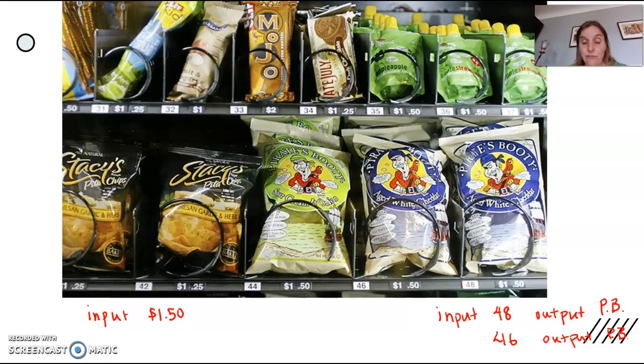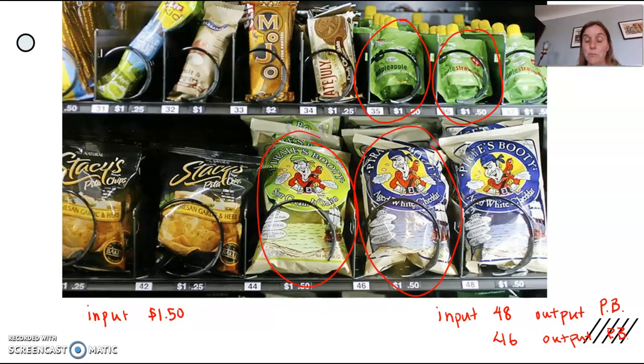In that case, if your input is $1.50, then there are lots of different outputs you could get. You could get applesauce, you could get strawberry applesauce, you could get pirate's booty, or you could get sour cream and onion pirate's booty.